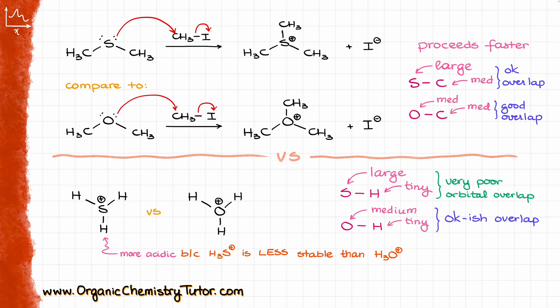So now we can see how because of the extremely poor orbital overlap, H3S+ is very unstable. However, in comparison, the sulfonium ion where we have bonds to carbon is significantly more stable now.